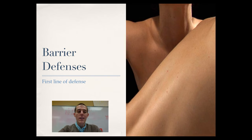Now the first kind of line of defense is a barrier defense. Barrier defense is anything that keeps the pathogen from getting to your body in the first place. So obviously the skin is the best known type of barrier defense. It keeps things from getting into the body.